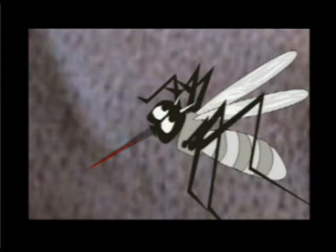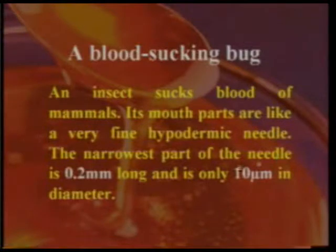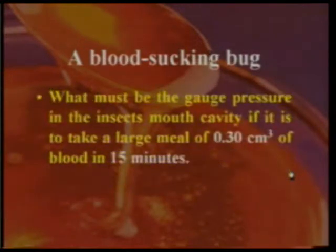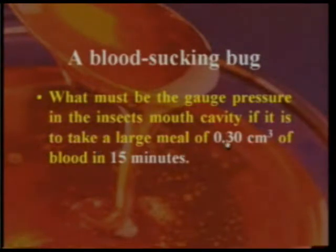Now let us solve one numerical problem. A blood-sucking bug — an insect that sucks blood of mammals — has mouth parts like a very fine hypodermic needle. The narrowest part of the needle is 0.2 millimeter long and only 10 micrometer in diameter. What must be the gauge pressure in the insect's mouth cavity if it is to take 0.30 centimeter cube of blood in 15 minutes?